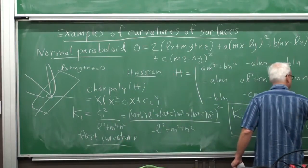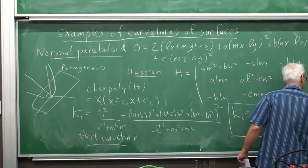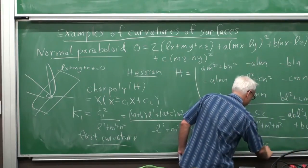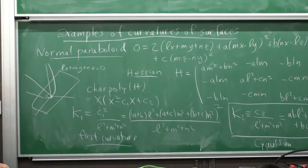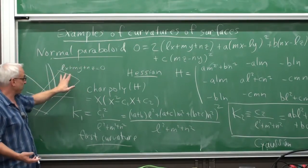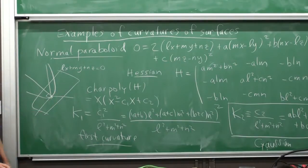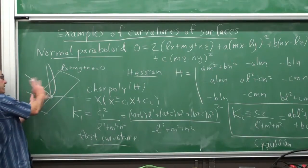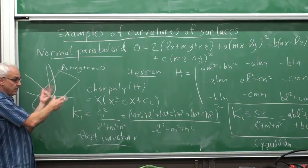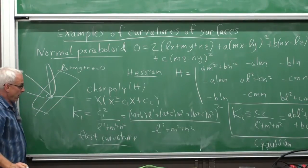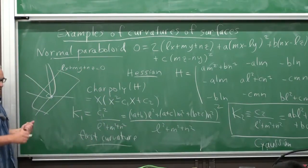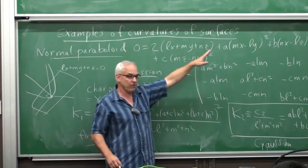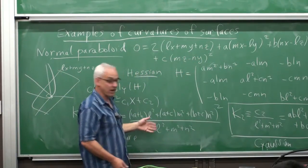Overall, these are pretty nice formulas. They depend on six inputs: the L, M, and N that determine the tangent plane, and then the three numbers A, B, and C that determine the shape of the paraboloid. The denominators are there to ensure these things are well defined — if you scale all the numbers by a factor, these curvatures remain unchanged.